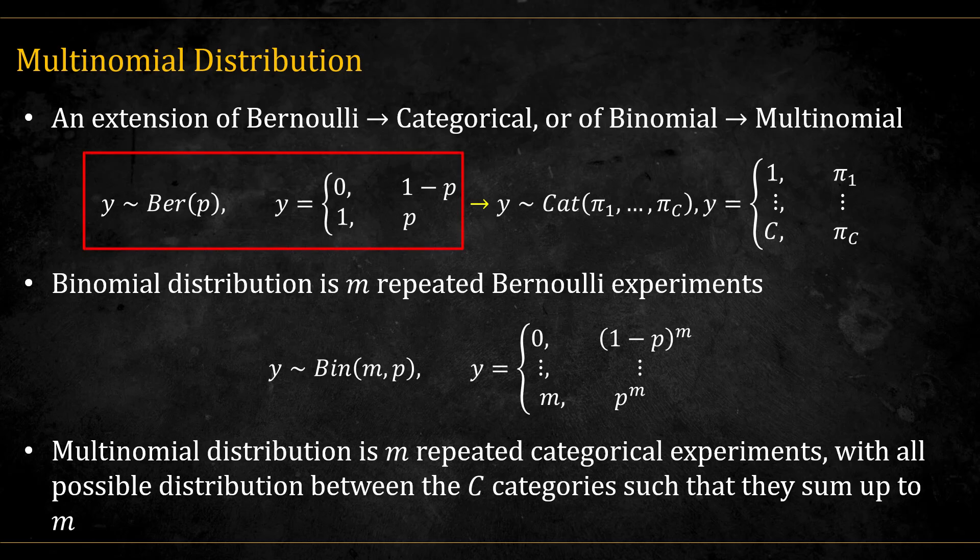Bernoulli distribution is a single experiment with two options, success and failure, one and zero. We can think about it as tossing a coin whose probability of falling on head is p. Categorical distribution is a single experiment with three or more options. We usually denote the number of different possible categories or classes with c. That is, the options are 1, 2, and up to c. We can think about it as throwing a dice with c sides and different probabilities of falling on each side.